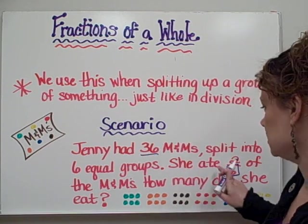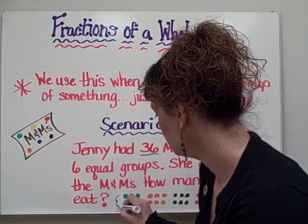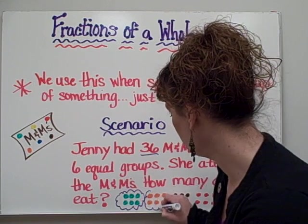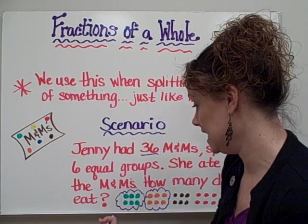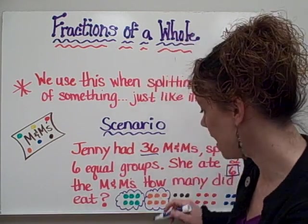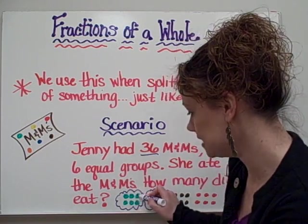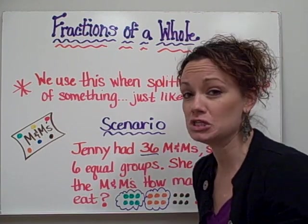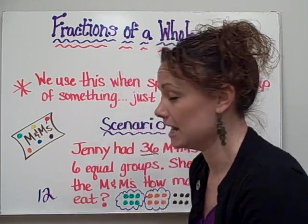So I have six groups of M&Ms. And my problem tells me she ate two of those groups. So she ate one group, two groups. And the final question is asking me how many did she eat in all? How many M&Ms did she have all together? If I count up how many were in the two groups, I would have 1, 2, 3, 4, 5, 6, 7, 8, 9, 10, 11, 12. There would be two groups of six, which would be 12 M&Ms in all.